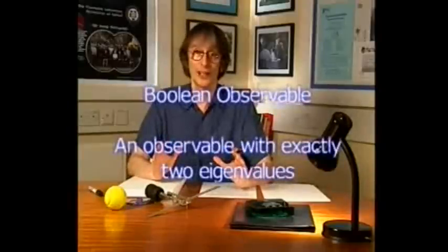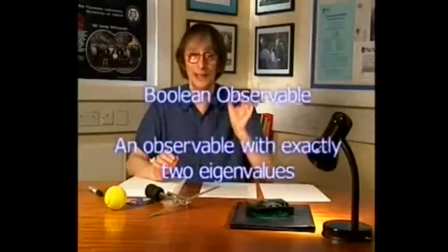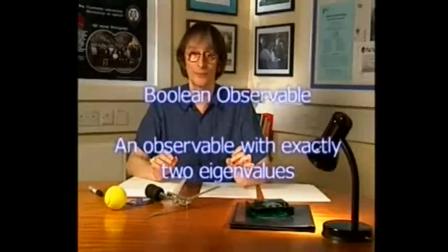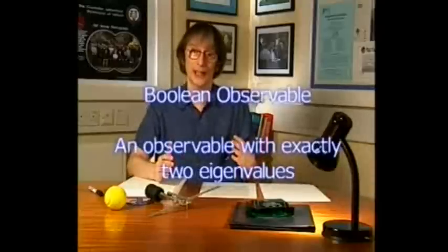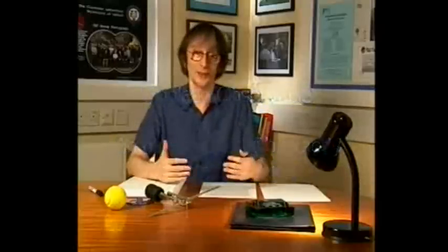The simplest possible quantum observable is a Boolean observable, defined as an observable with exactly two eigenvalues. Any observable simpler than that, having only one eigenvalue, would be trivial. It would be a multiple of the unit observable. Every physical system has Boolean observables.